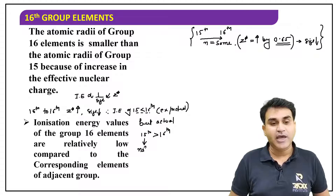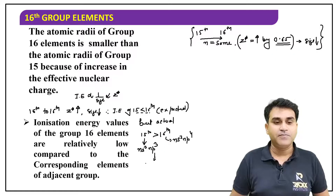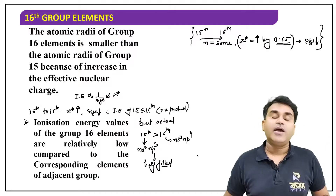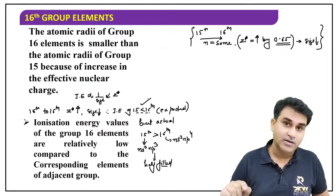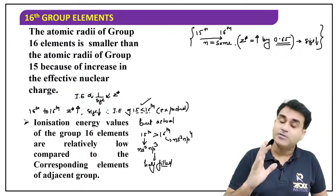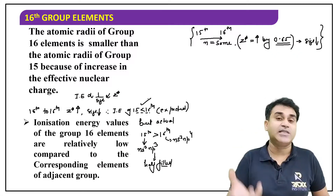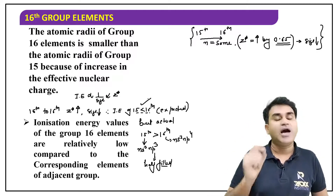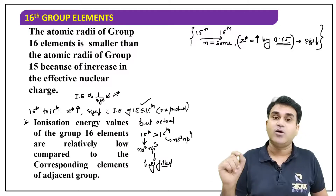The 15th group configuration is ns² np³ — half-filled p orbitals. The 16th group configuration is ns² np⁴. So ionization energy of 16th should be more than 15th, but actually 15th is more. The 16th group has smaller size, more protons, and more nuclear attraction — still ionization energy is less. The simple reason: 15th group elements have half-filled orbital stability of p orbitals.